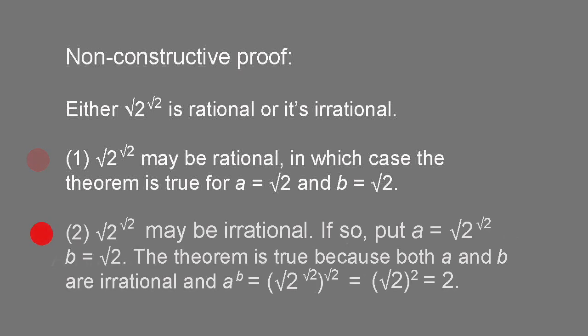The alternative case is that root 2 to the root 2 is irrational. In this case, if we take a equals root 2 to the root 2, and b equals root 2, then again, both a and b are irrational, and it turns out that a to the power of b equals root 2 to the root 2 all to the root 2, which equals root 2 squared, which equals 2, which is rational.